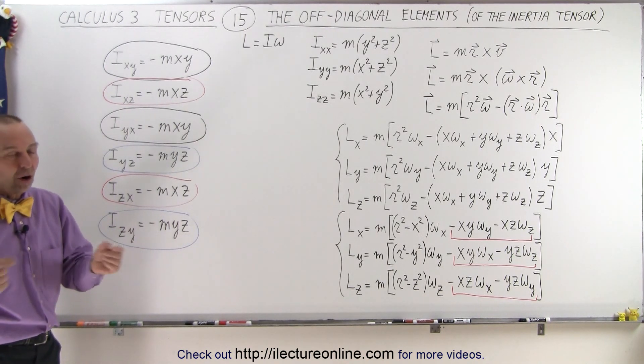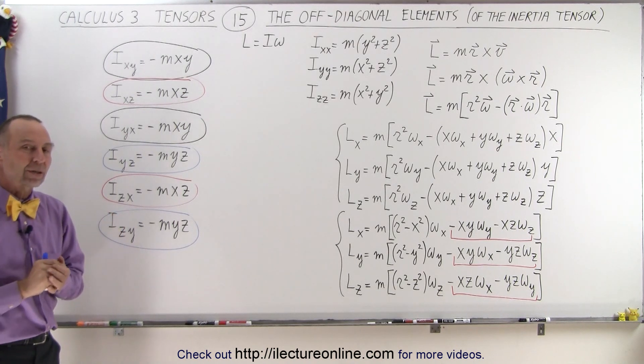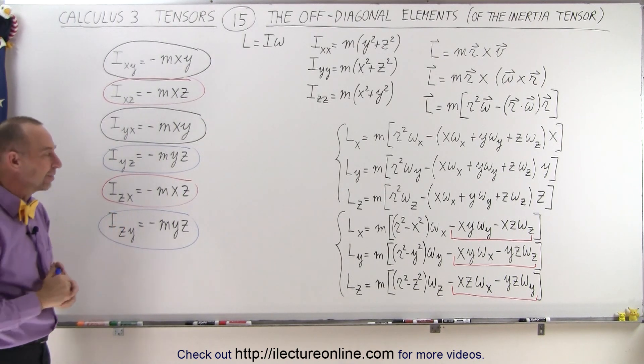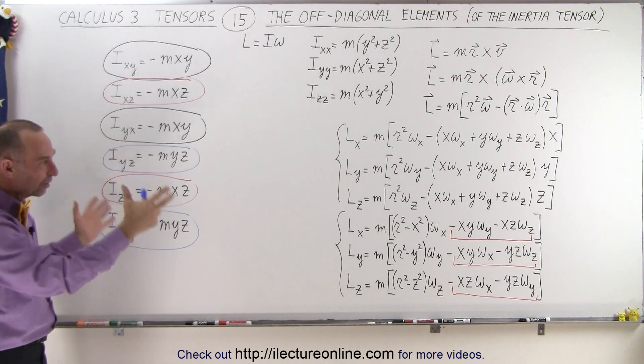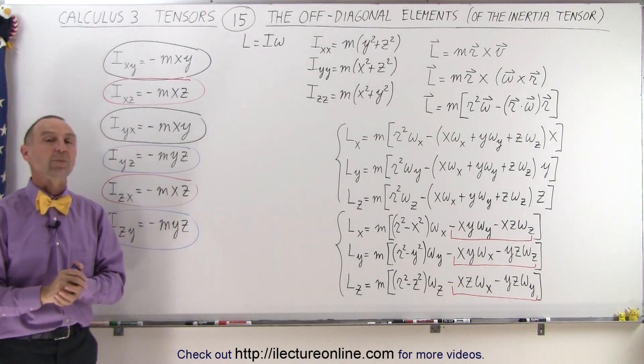And of course, the distance r, which is the distance from the point of rotation to where the particle is about each of the three axes. So stay tuned and we'll show you what this complete inertia tensor then will look like.